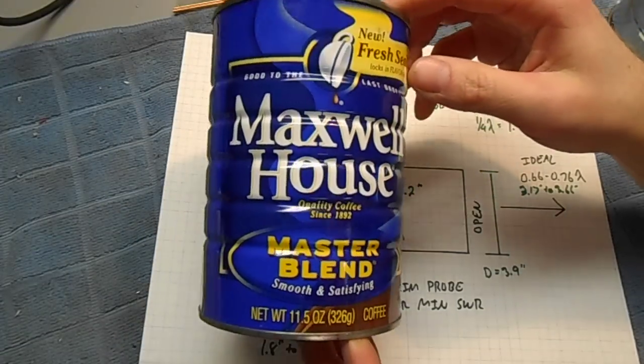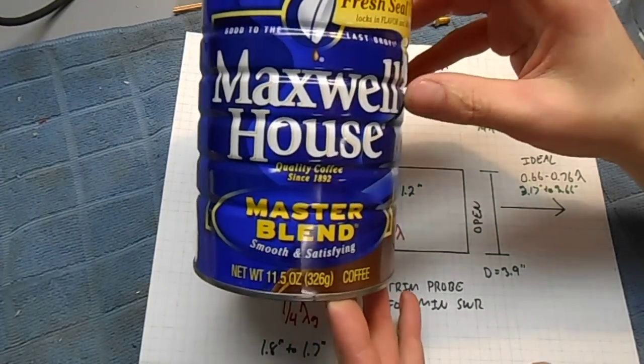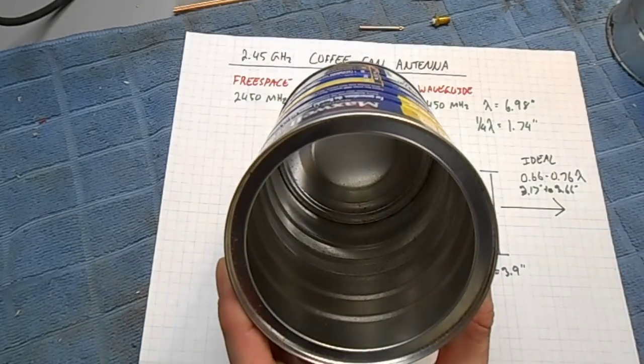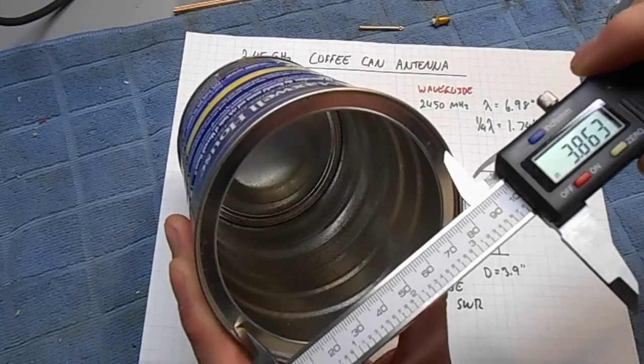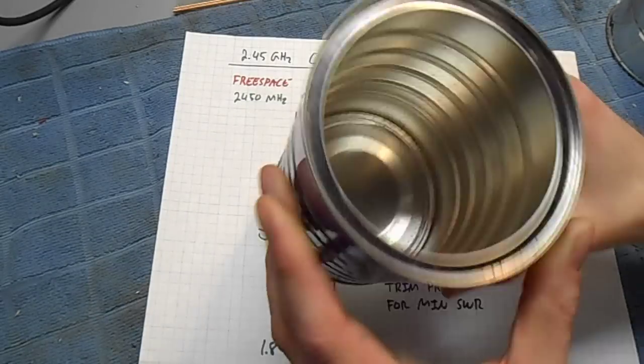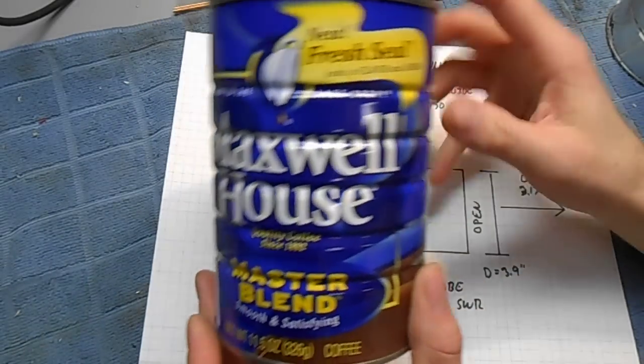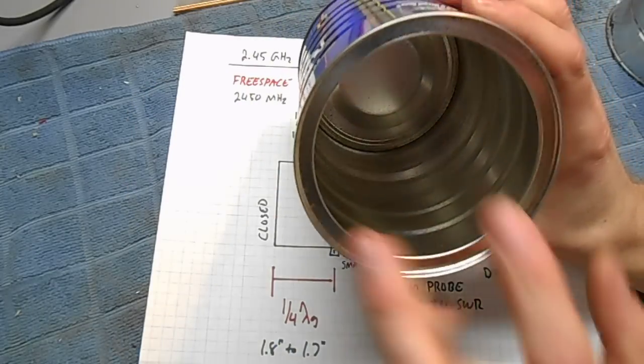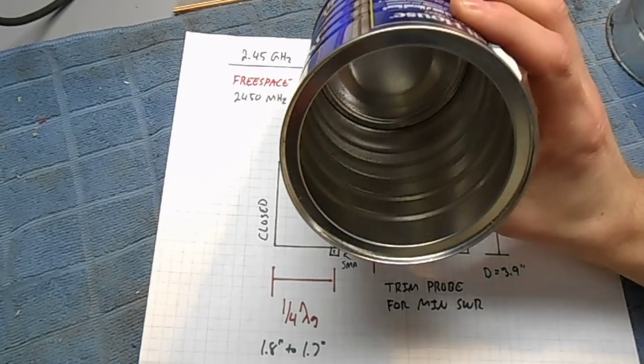The coffee cans are usually 11.5 ounce standard coffee cans with an opening of approximately 3.9 inches. The length of the coffee can doesn't really matter as much as the diameter. The diameter sets the mode of propagation.